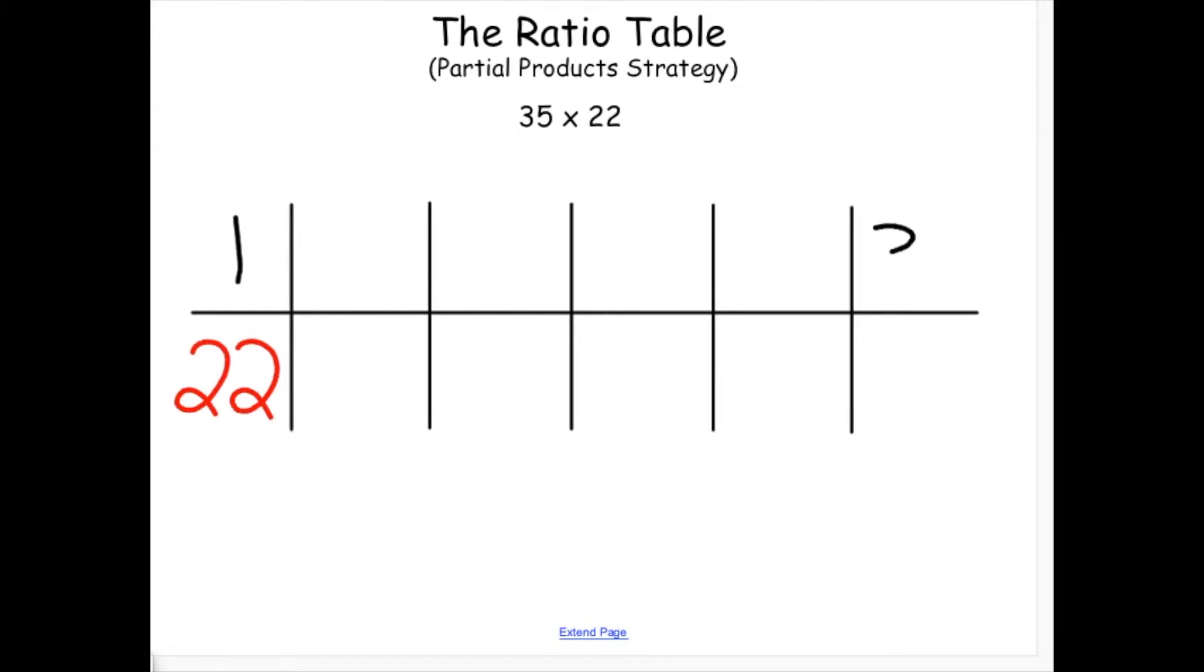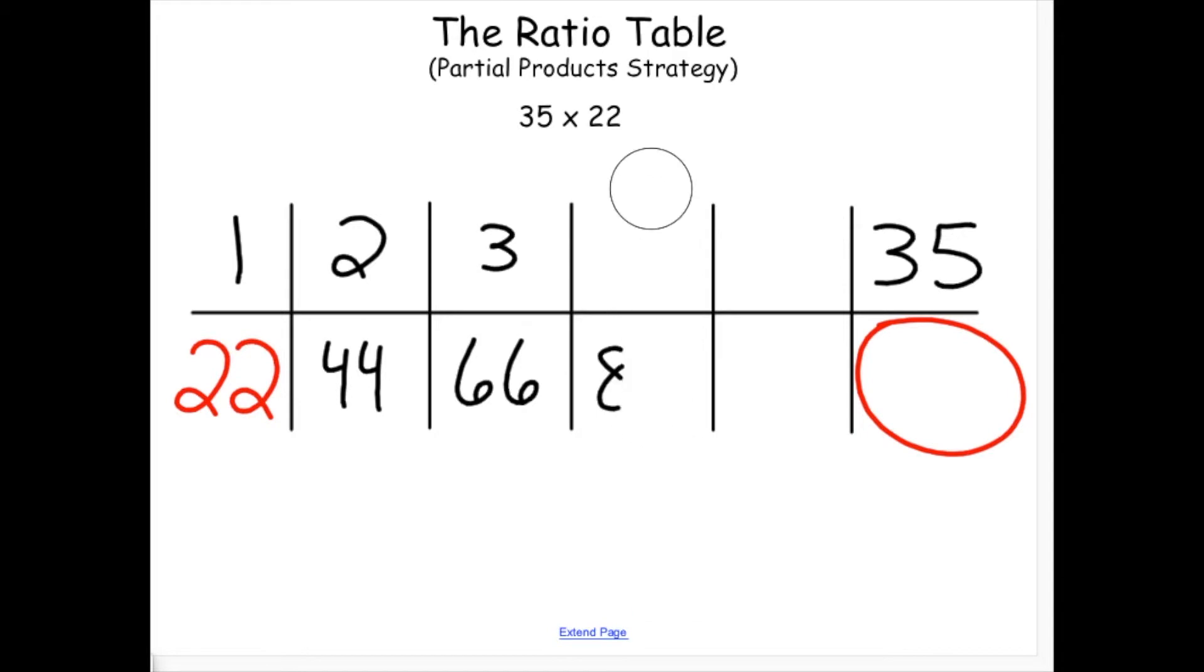This top row eventually needs to get to 35, and when it does, the bottom row will tell me what my answer is. Now, I could continue to add groups of 22 together until I reach 35, but that would take too much time, especially if working with larger numbers.